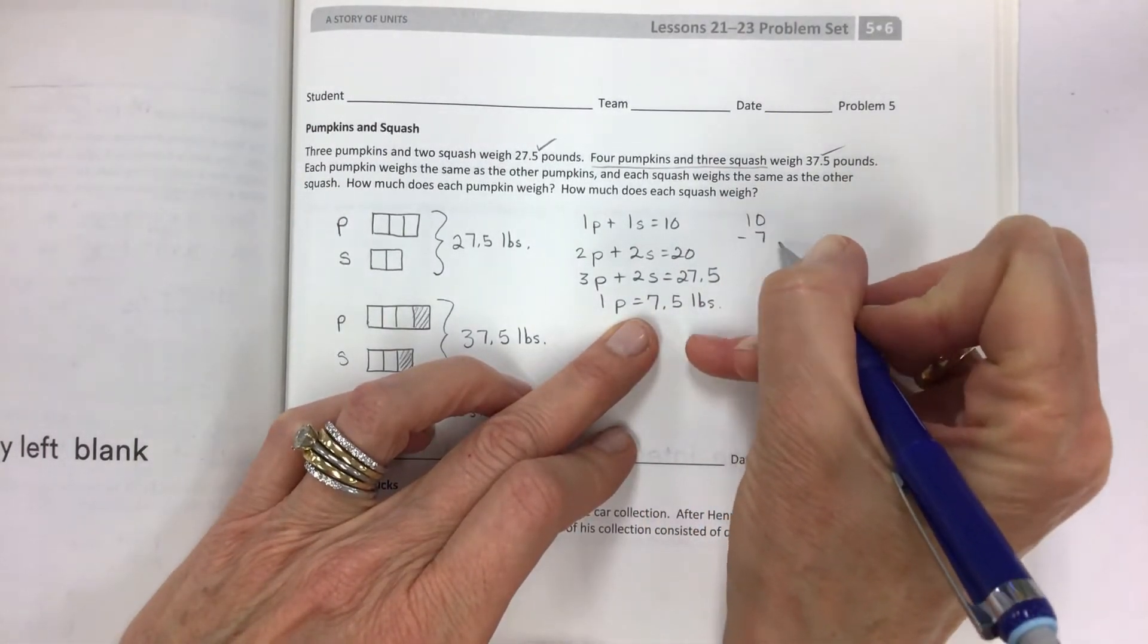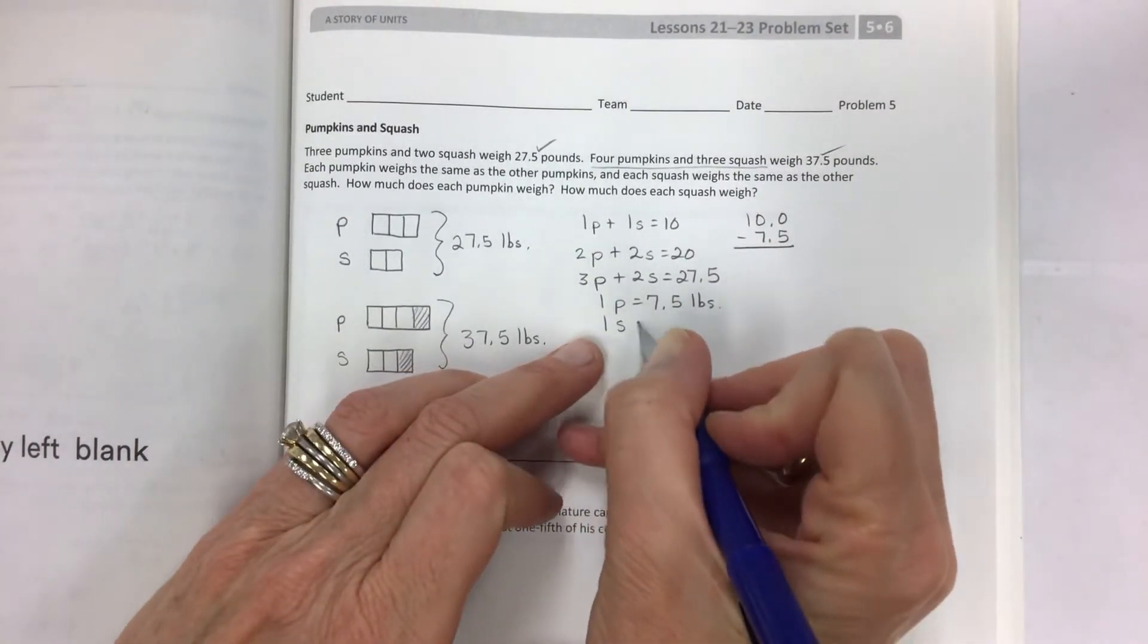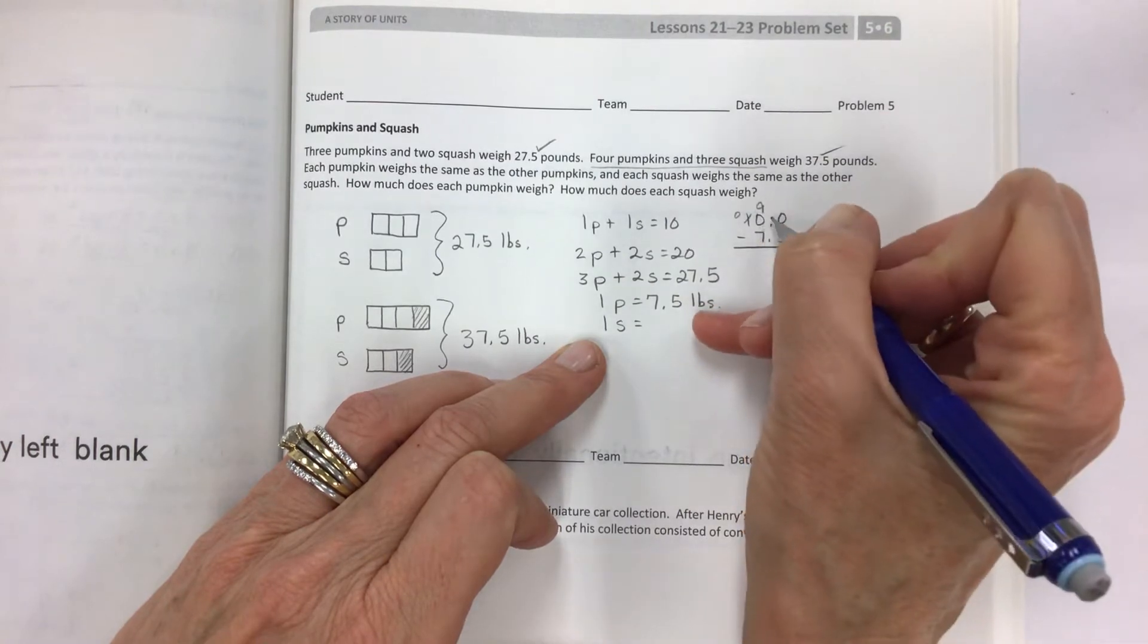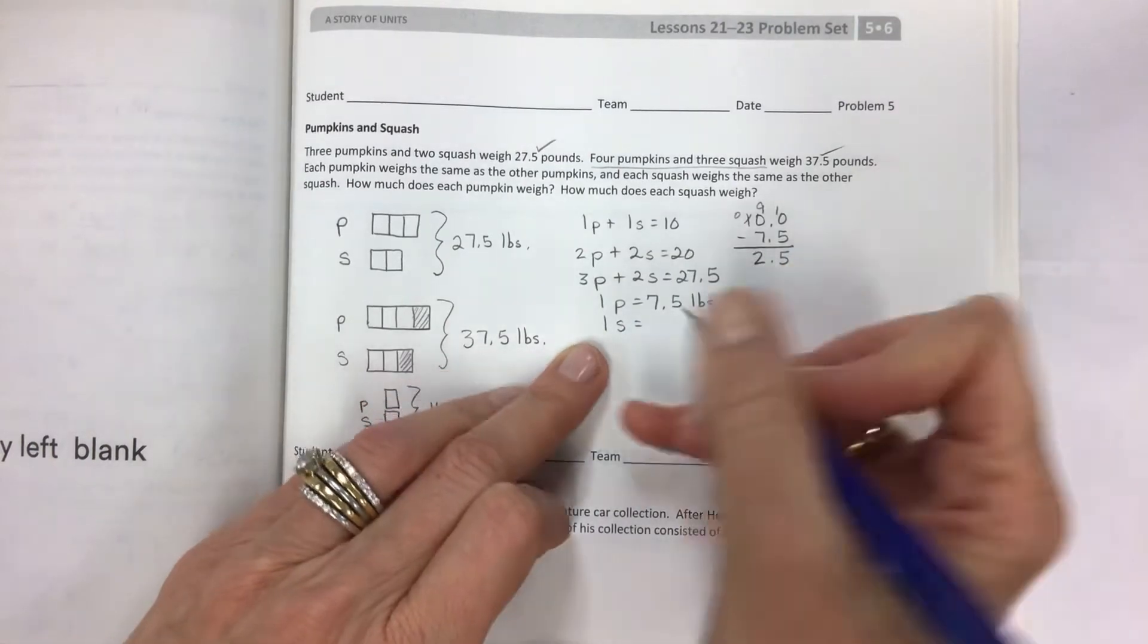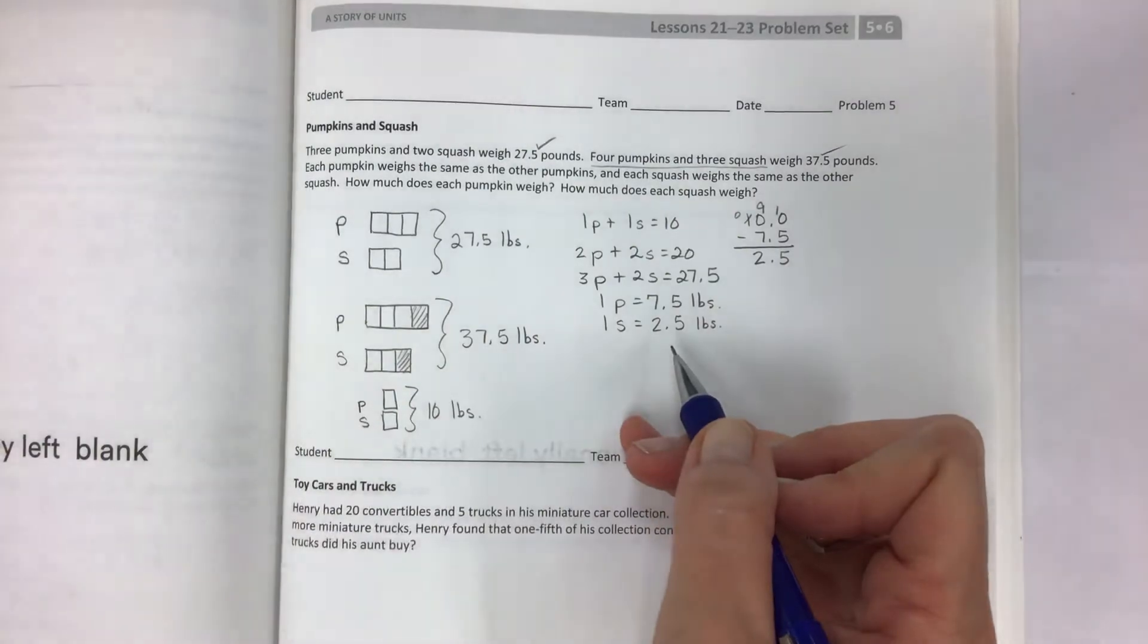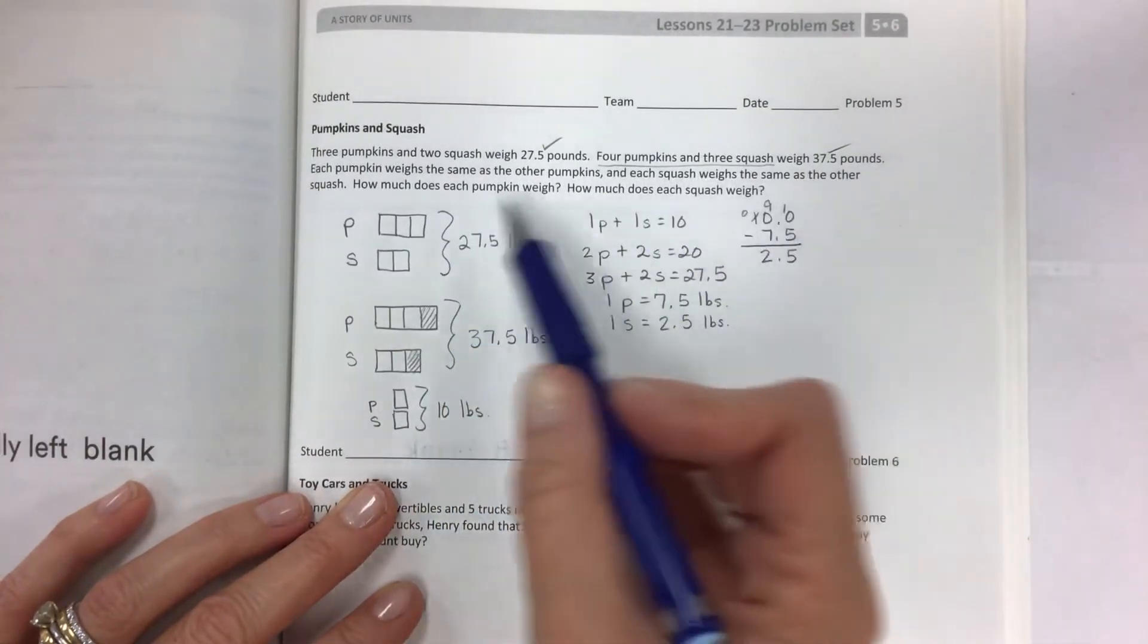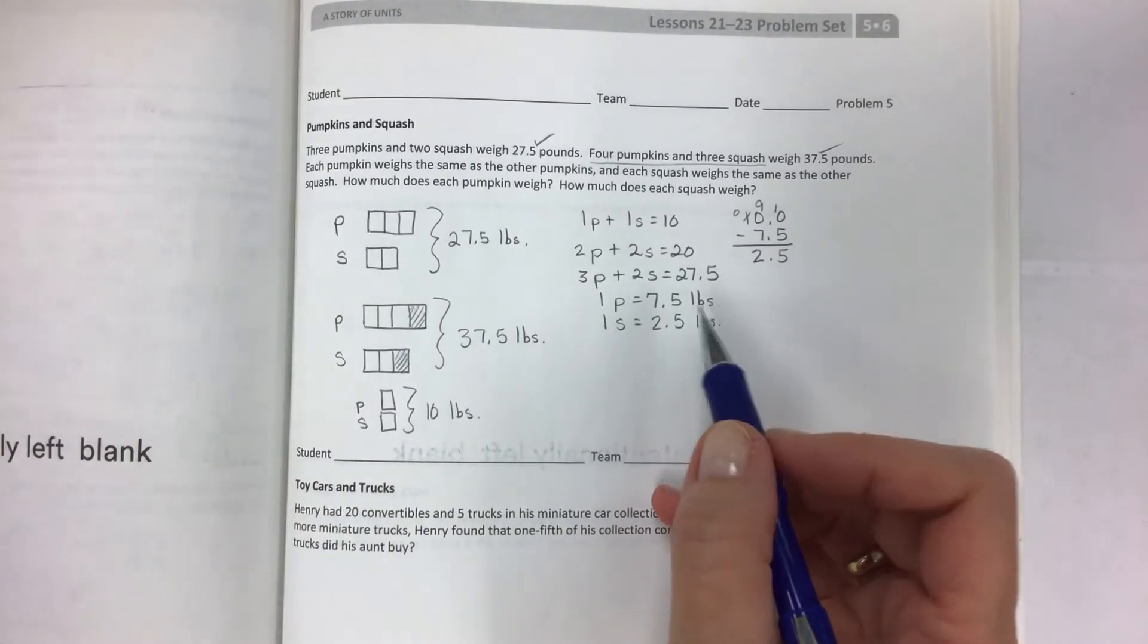Now if one pumpkin equals 7.5 pounds and the difference between the two is 10 pounds, then you do a subtraction problem to figure out the one squash. You can take one from here, give ten, remember zeros it's nine and ten on the end. So one squash is 2.5 pounds. Now let's go back up here. Each pumpkin, each squash. How much does each pumpkin weigh? How much does each squash weigh? And that's all we need to do there.